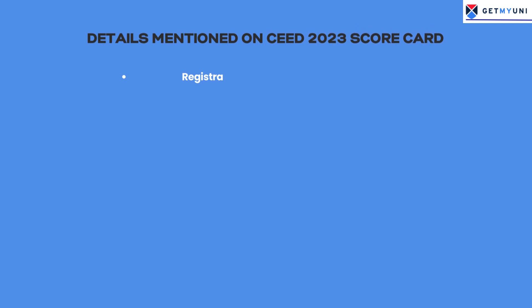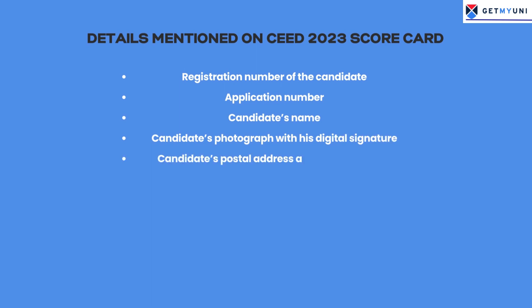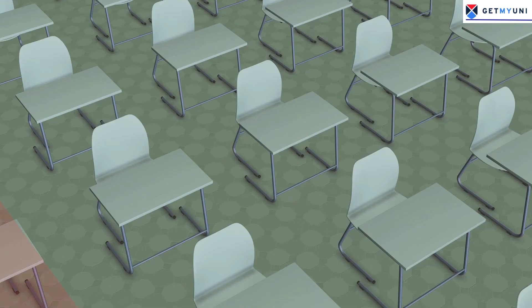The following information will be printed on the CEED Scorecard 2023: registration number of the candidate, application number, candidate's name, candidate's photograph with digital signature, candidate's postal address and contact details, rank, qualifying status, and merit rank.